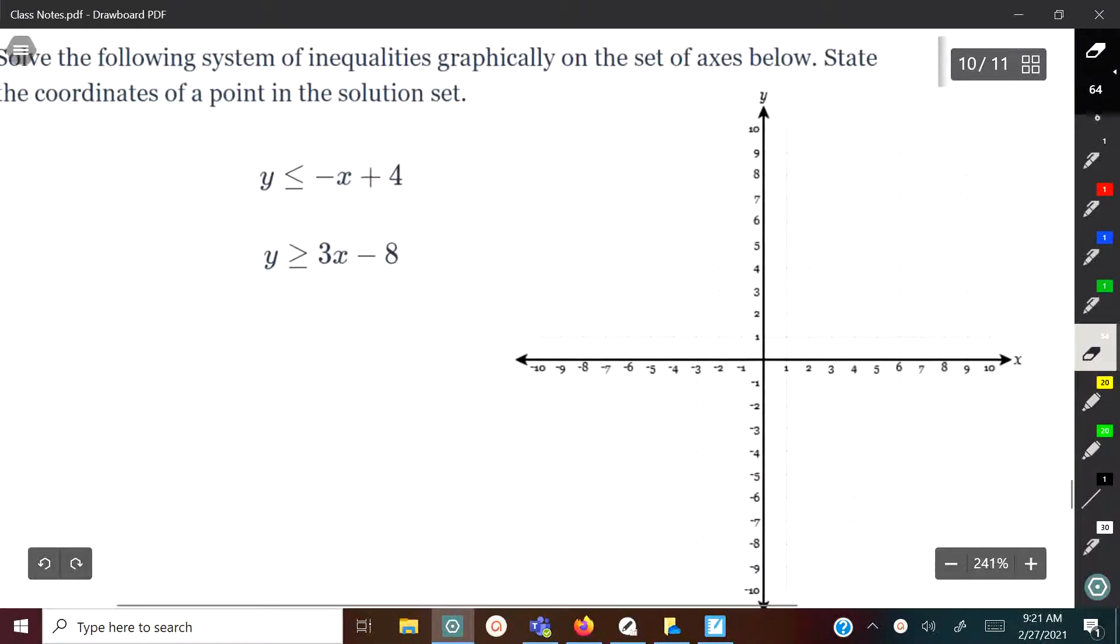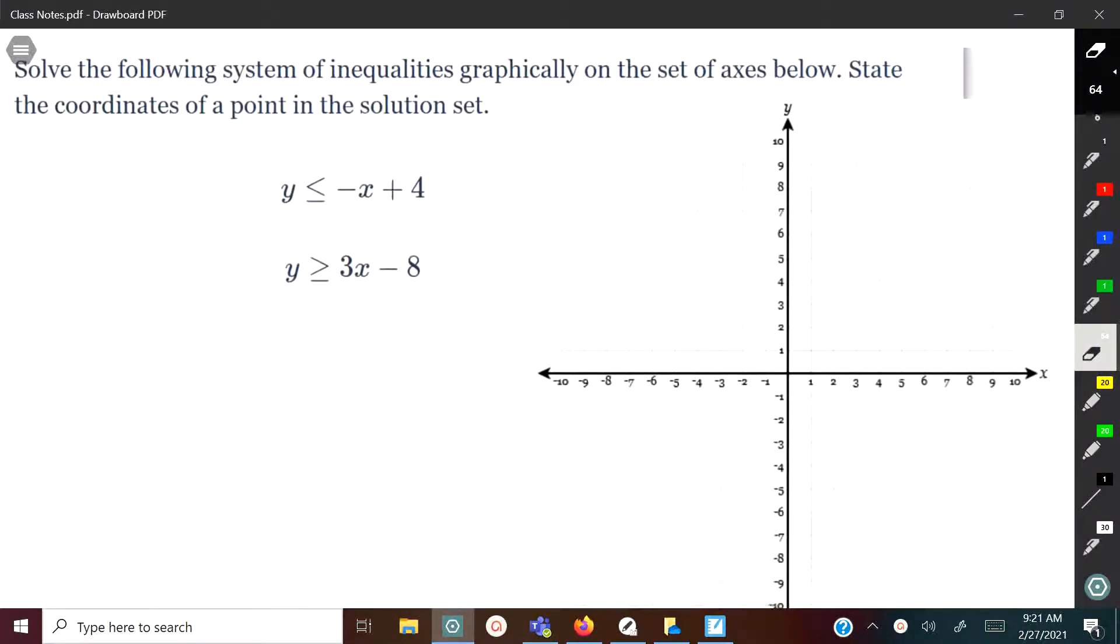So here's our first example. To solve the following systems of inequalities graphically on the set of axes below, state the coordinates of a point in the solution set. What they mean by that is there's multiple solutions for this system of inequalities, and they just want you to pick out one of them and I'm going to show you how to do that. But first we're going to start with some of the things you probably already know. We're just going to graph the inequalities.